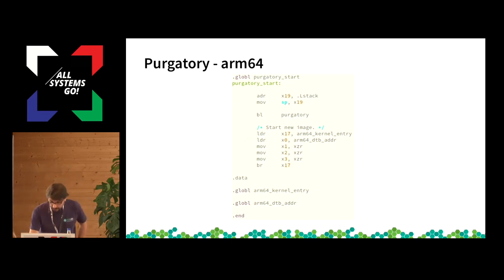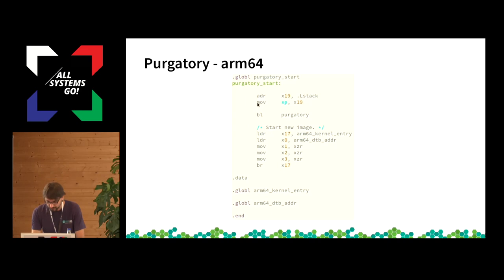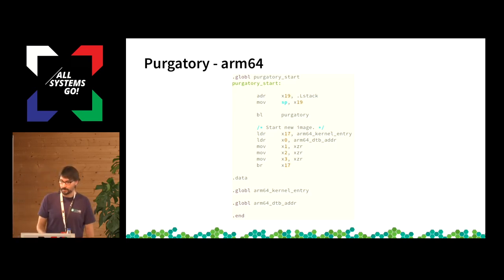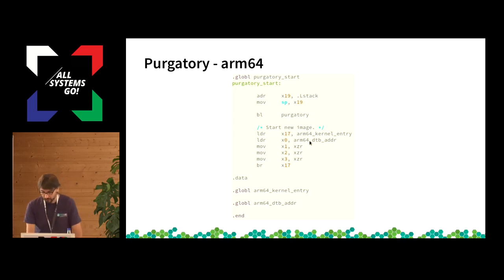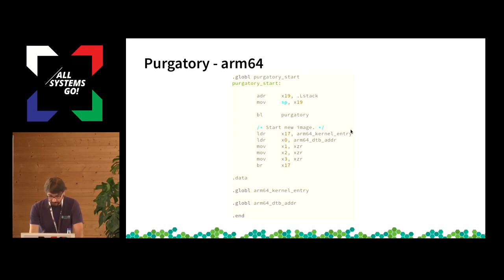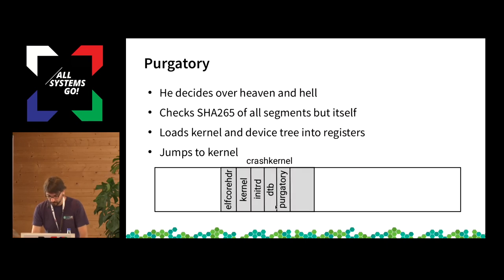For ARM64, the purgatory is assembler code. It creates a small stack, then calls a C function that checks the hashes of the different segments. It then loads the kernel address into a register, the device tree address into a register, and boots the kernel — this is just the normal way to boot ARM64. kexec-tools updates the kernel address and device tree address in this file to point to the kernel and device tree in the reserved memory area.